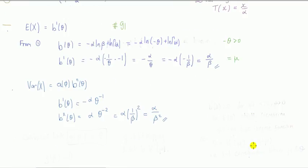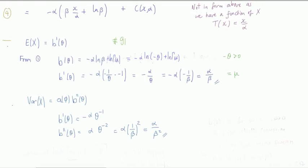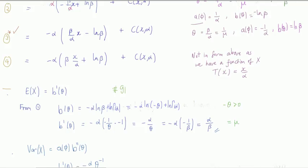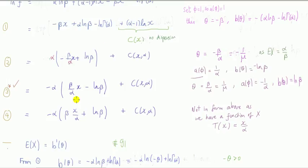Now we might as well use this to find the mean and variance so you understand the importance of the b function. We showed in problem 91 that the mean of the random variable is given by the first derivative of b — we call this the cumulant function. We can work with any of those representations above; let's work with representation 1. You can do the same for 2, 3, and the others to show you get the same values for mean and variance. The b function, as I've written it, is this.